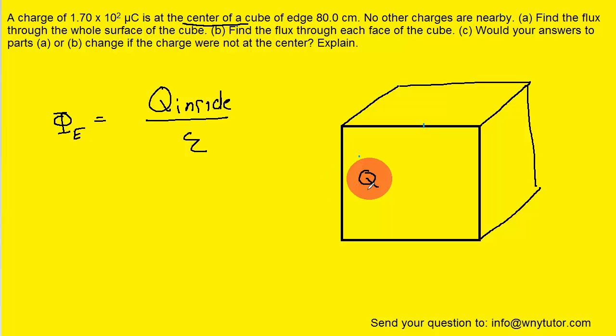The reason is because the charge is no longer in the center. Remember, when it was in the center, the flux was evenly distributed across the six faces of the cube. But now that it's closer to one edge compared to the other, the flux will change through each surface.